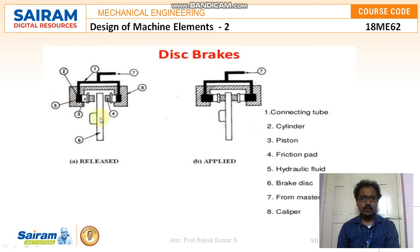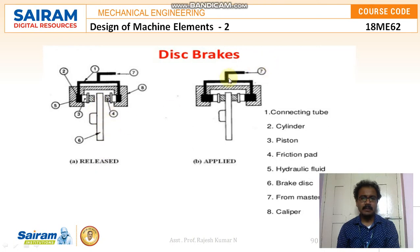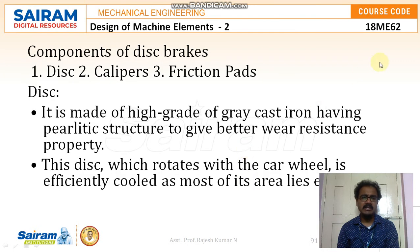Number four is the friction pad, located after the cylinder. In the released position the friction pad has no contact, but when applied the friction pad makes contact. Number five is the hydraulic fluid, which is filled inside the connecting tube. Number six is the brake disc. Number seven is the master cylinder — from the application point to the cylinder. Number eight is the caliper, which completely covers the setup. So the major components are the disc, caliper, and friction pads.